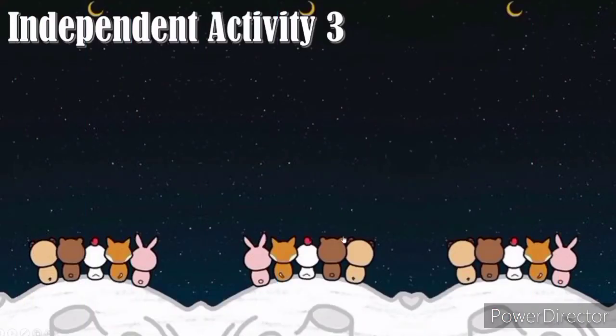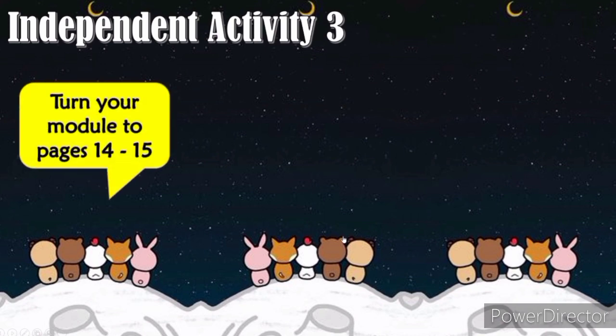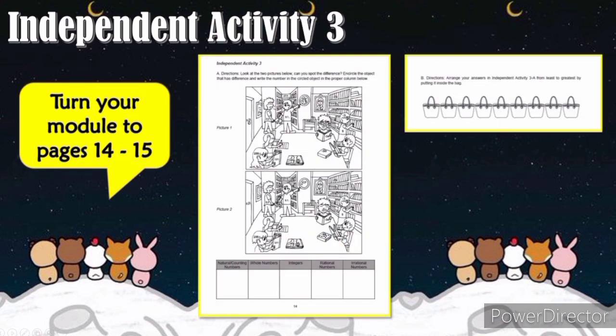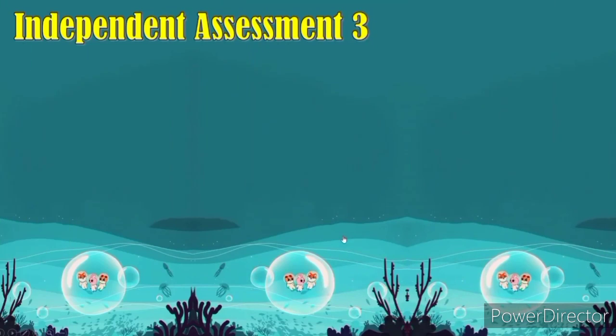Independent activity number 3. Turn your module to pages 14 and 15. For letter A, look at the two pictures below. Can you spot the difference? Circle the object that has difference and write the number in the circle object in the proper column below. For letter B, arrange your answers in Independent activity 3A from least to greatest by putting it inside the bag.